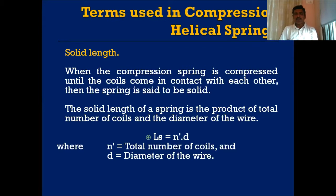In a compression helical spring, the adjacent coils are not in contact with each other — they have a gap. When load is applied, this gap is nullified and the adjacent coils come into contact. When the compression spring is compressed until all coils are in contact, the spring is said to be solid, and the length of this solid portion is the solid length of the spring.